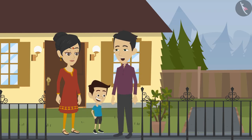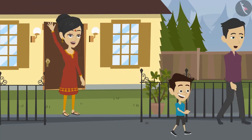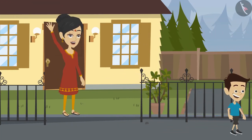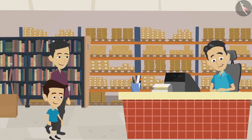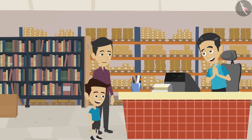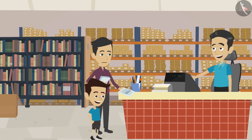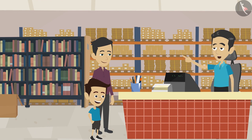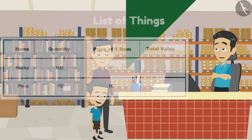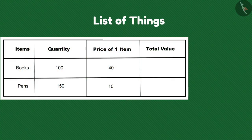How are you, Mohan? I want these things to open my shop — tell me the cost of these things. Brother Ramu, one book costs rupees 40 and one pen costs rupees 10. Look Sham, the shopkeeper told us the cost of one item — now can you tell me the total cost?